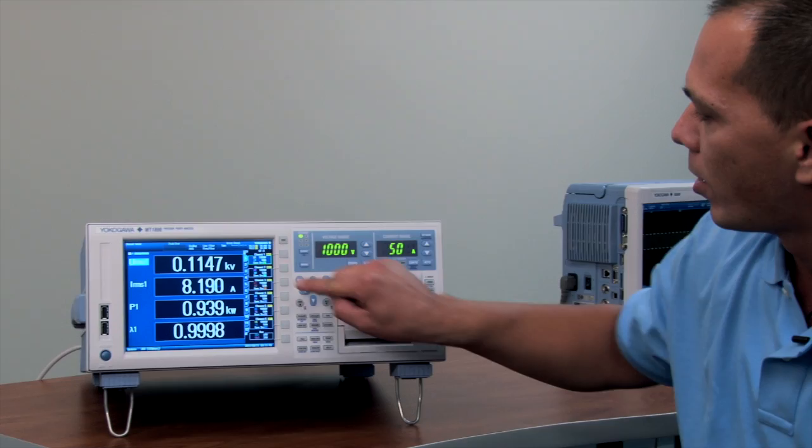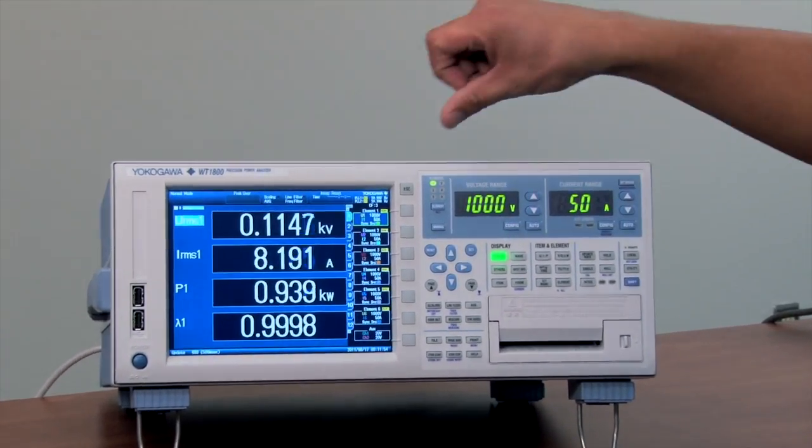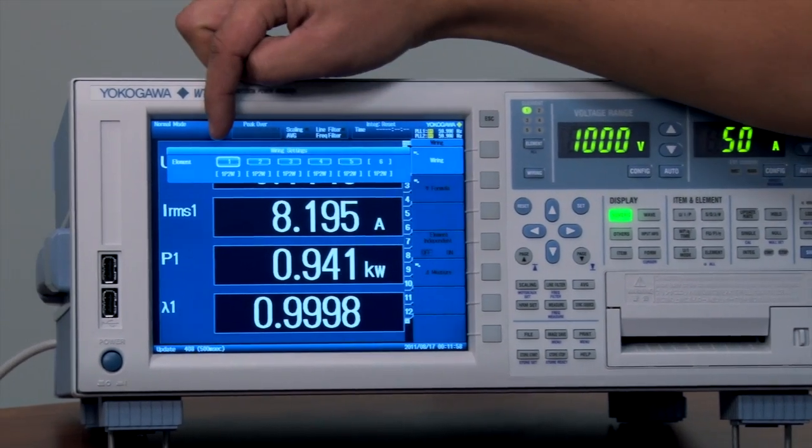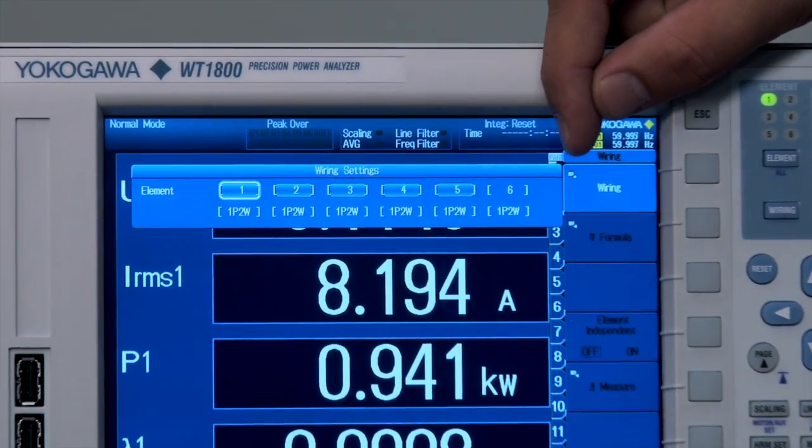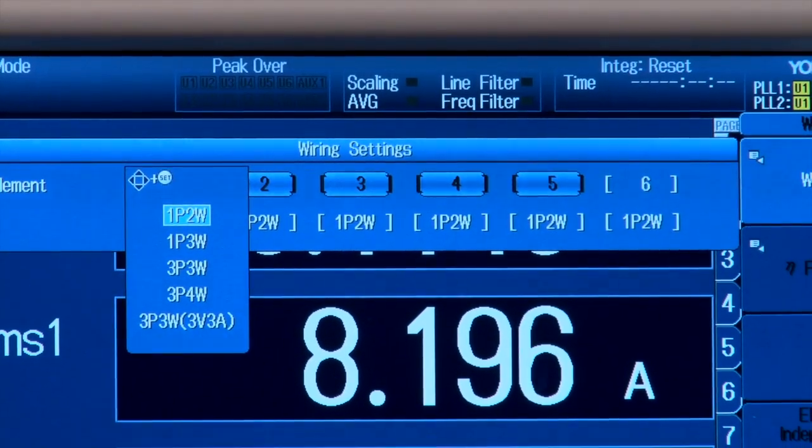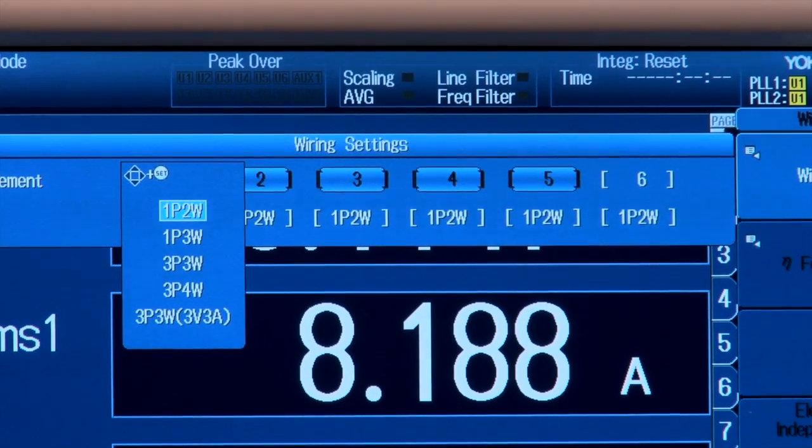The WT1800 is very easy to set up. Once you wire up the unit in the back, it's a matter of telling the instrument how you're wired. You start by keeping either of the six input elements as single phase inputs, or you can easily switch and select three phase so you can have a combination of a three phase input and output of an inverter, for example, to compute efficiency.